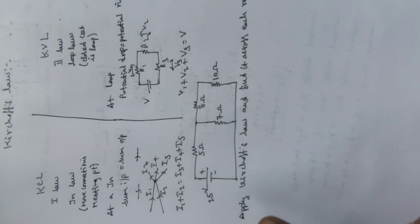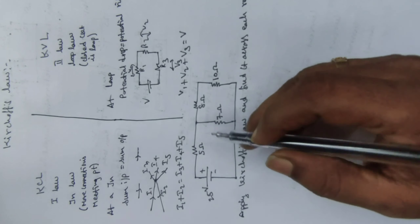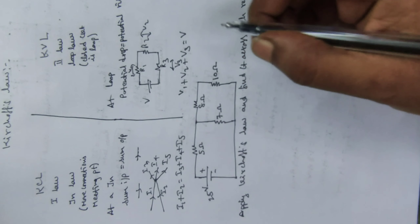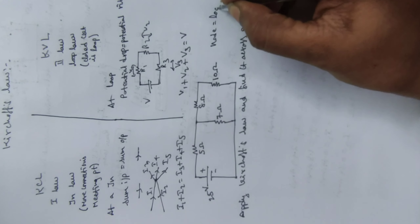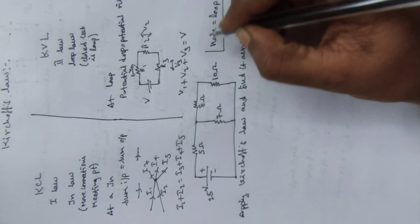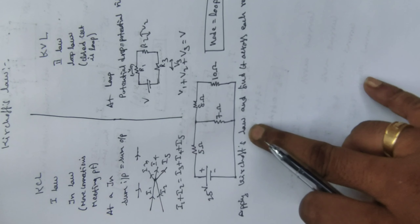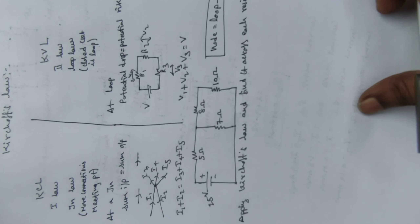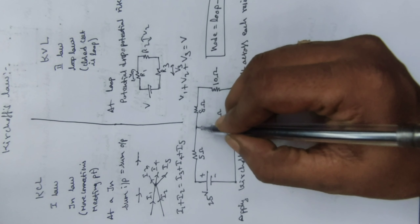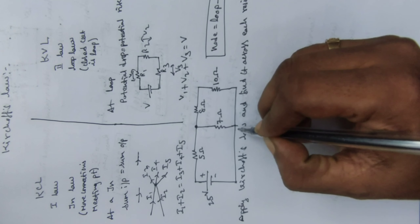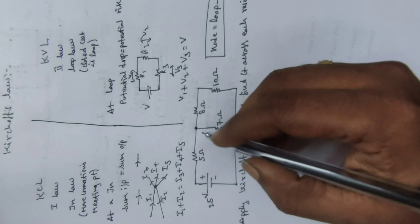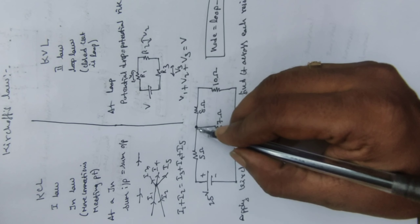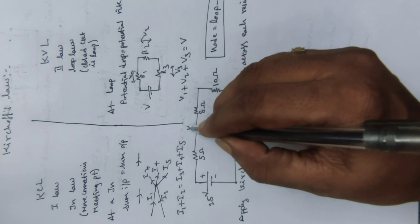First, in a given circuit we need to check how many loops and how many nodes there are. Here we have two visible loops. In a linear circuit, nodes equal loops minus one. Since my loops are two, I will have only one node in the given circuit. That one node is the active node, and the other is the return node. For the return node the potential value is zero, so we need not consider it. I need to apply Kirchhoff's Current Law only at the active node.